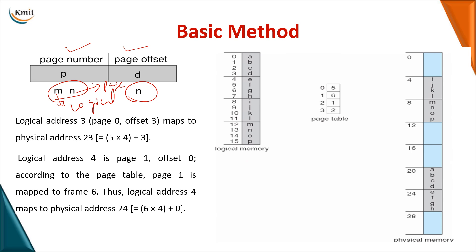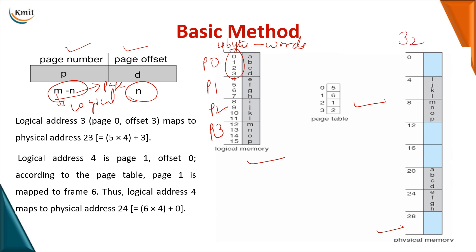Consider an example: logical memory on one side, physical memory on the other, with a page table in between. There are four pages — P0, P1, P2, and P3 — each capable of storing 4 bytes. The physical memory is 32 bytes total with 8 frames (frames 0 through 7), each storing 4 bytes. So 8 frames × 4 bytes = 32 bytes. We will now see how address mapping actually works.